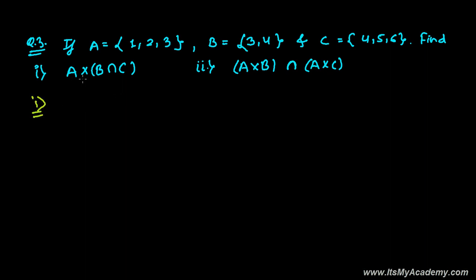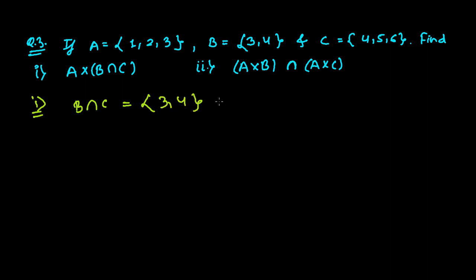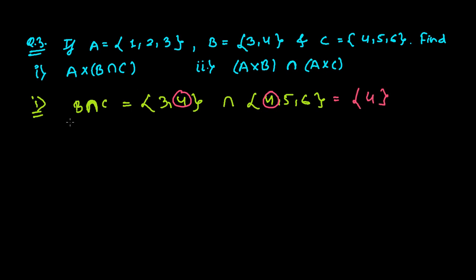To solve the first question, we first need to find B intersection C. B contains 3 and 4; C contains 4, 5, 6. Intersection means the set of common elements, and the only common element here is 4. So B intersection C equals {4}.